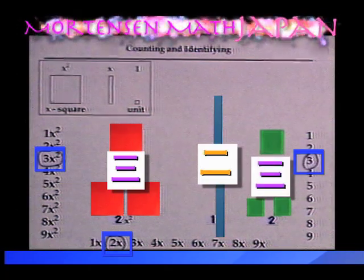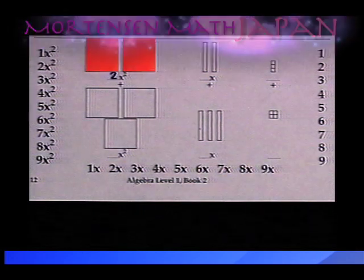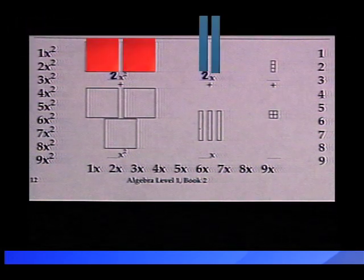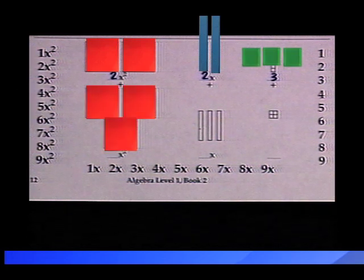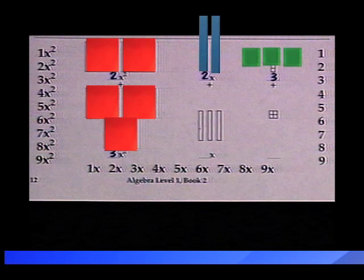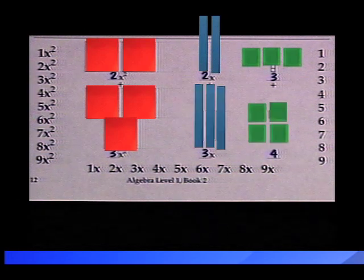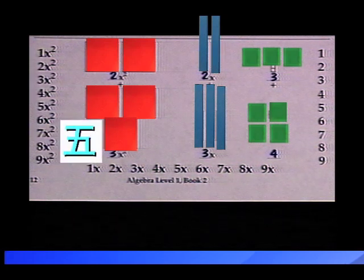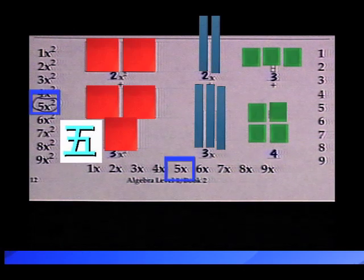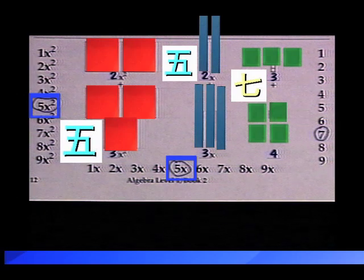Let's do the next one. In the top row, we are counting 2 x-squares, 2 x's, and 3 units. In the bottom row, we are counting 3 x-squares, 3 x's, and 4 units. Together, there are how many x-squares? 5. How many x's? 5. How many units? 7. Great!